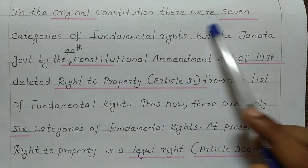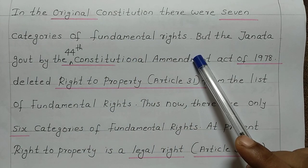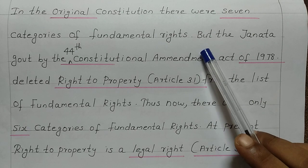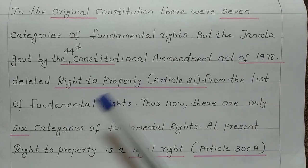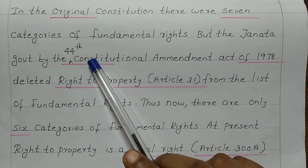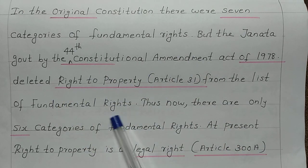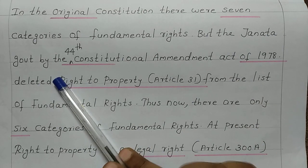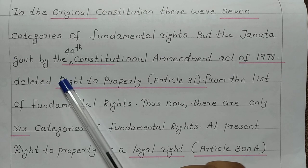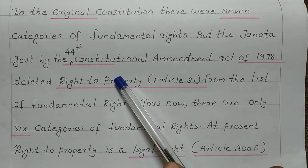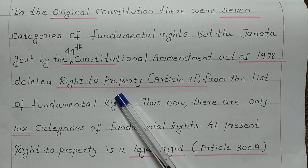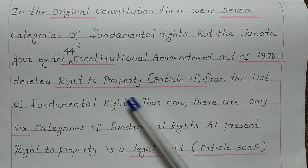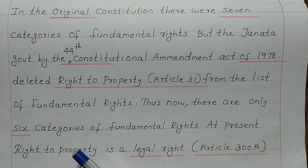In the original constitution, there were seven categories of fundamental rights. However, the Janata government in 1978, by the 44th Constitutional Amendment Act, deleted the right to property — Article 31 — from the list of fundamental rights. Thus, now there are only six categories of fundamental rights.